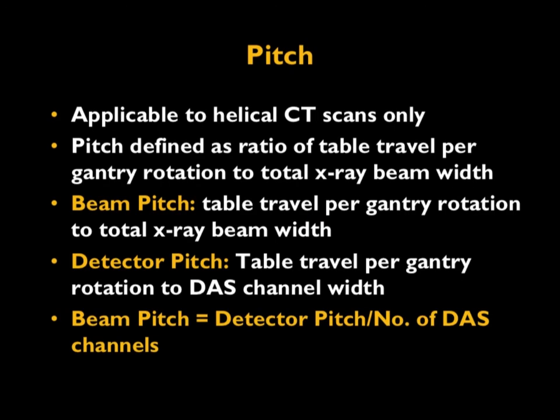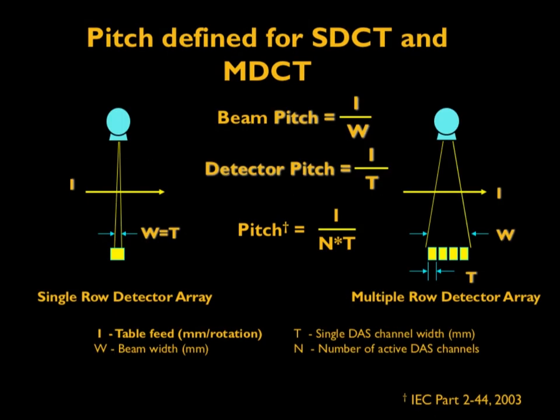The second factor I want to talk about today is pitch, which is applicable to helical CT scan only. Pitch is defined as the ratio of the table travel per gantry rotation to the total X-ray beam width. When multi-detector CT was introduced, there were two types of pitch: beam pitch and detector pitch. Beam pitch was defined as the table travel per gantry rotation to the total X-ray beam width, whereas detector pitch was defined as the table travel per gantry rotation to the individual channel width.